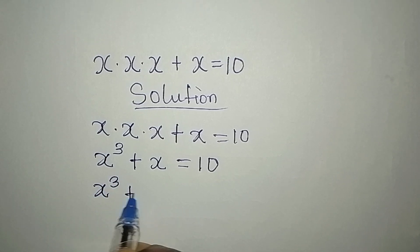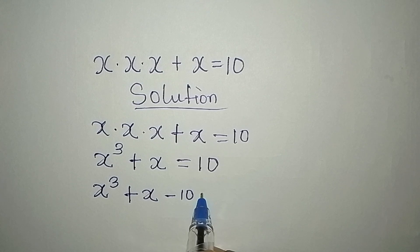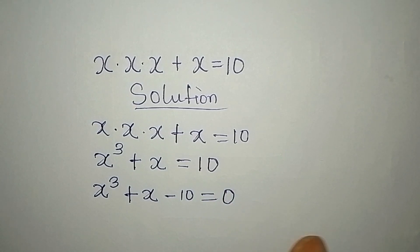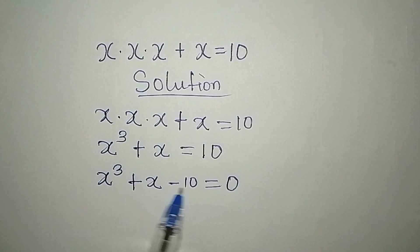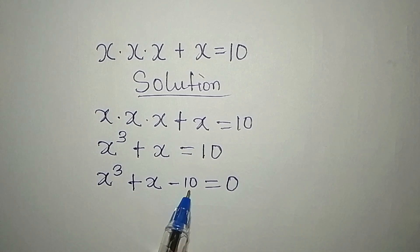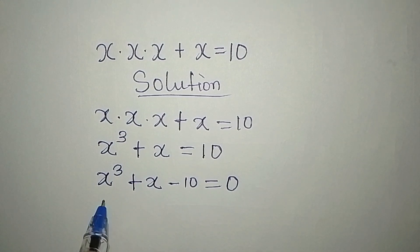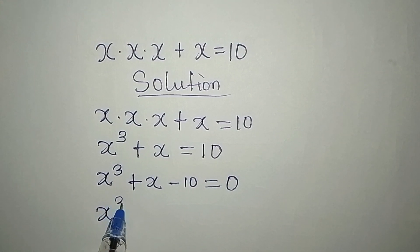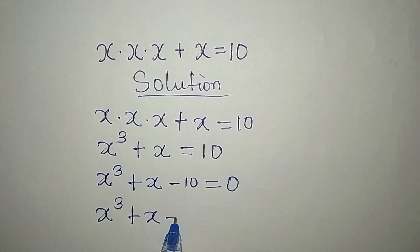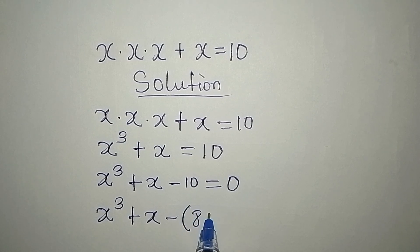So we have x to the power of 3 plus x, and this becomes minus 10 equal to zero. If you have a problem like this you begin to imagine how you can progress with it, but we can express 10 in a different form. It is better to go that way, so we have x³ + x minus, and I'll open a bracket: 10 is the same as 8 plus 2.